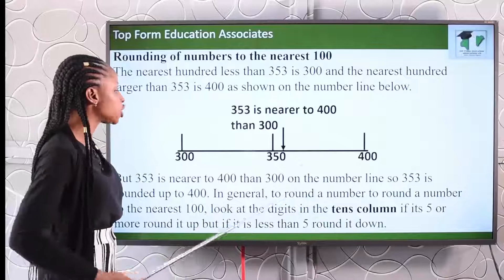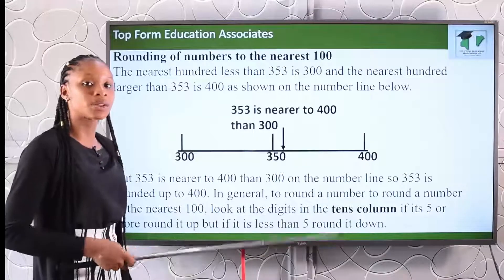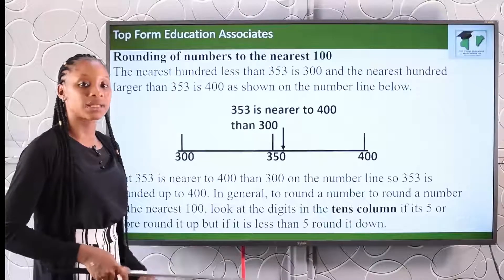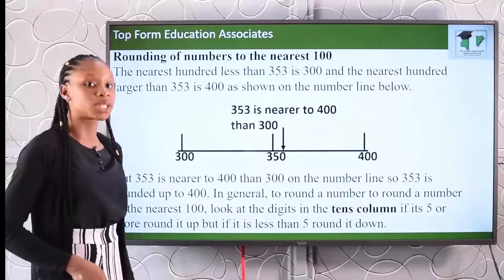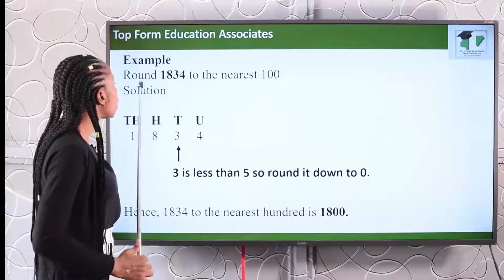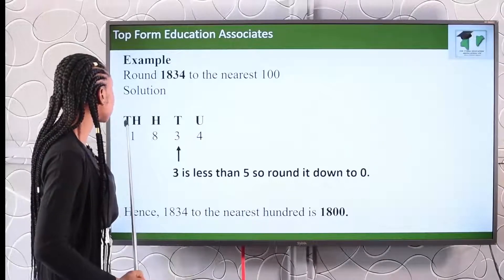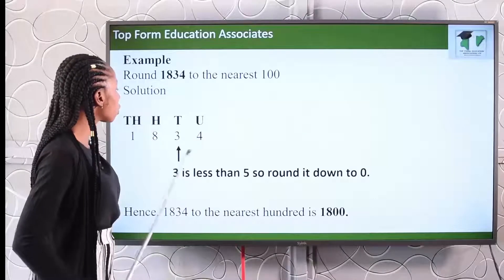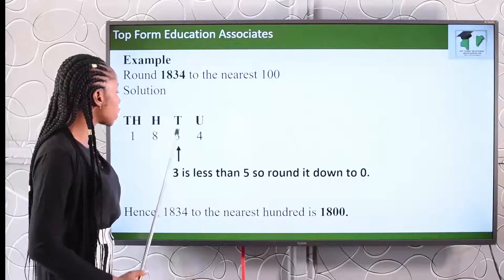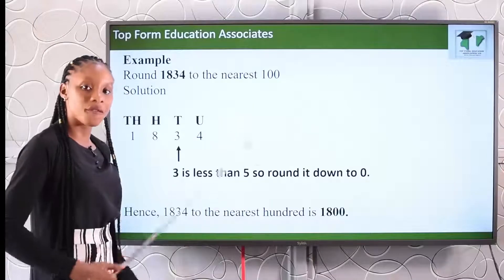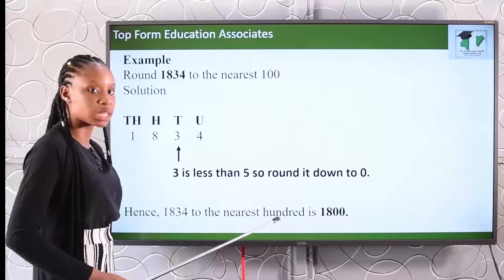In general, to round a number to the nearest hundred, you look at the digits in the tens column. If it is 5 or more, you round up. But if it is less than 5, you round down. For example, round 1,834 to the nearest hundred. We place it under the columns. In the tens column, we have 3, and 3 is less than 5. So we round down, and 1,834 to the nearest hundred is 1,800.